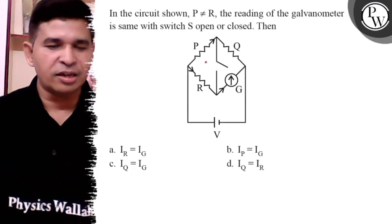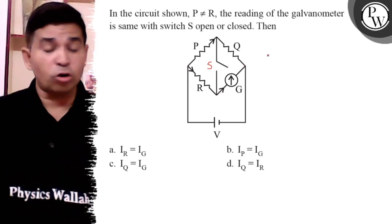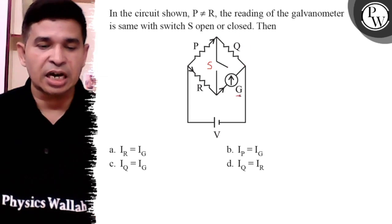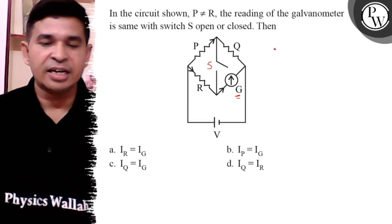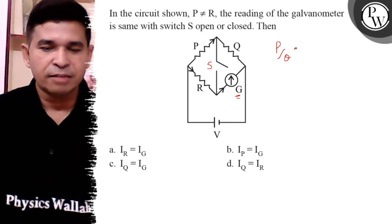Switch S is open or closed. There is no change in current of galvanometer. It indicates the bridge is balanced.